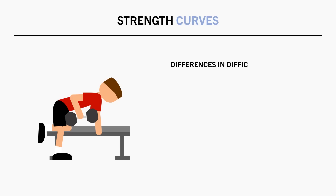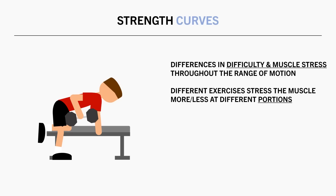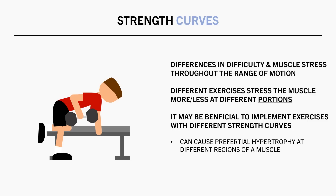The next consideration is the strength curve of each exercise. This refers to how difficult an exercise is at different portions throughout the range of motion and how hard the muscle has to work at different points of the movement. While two exercises may train the same muscle, certain exercises may have more or less tension at different portions of the movement, meaning different exercises may stress the muscle more or less at different ranges of motion. So in theory, it may be beneficial to implement multiple exercises which train a muscle group with different strength curves, potentially resulting in preferential hypertrophy at different regions of the same muscle and more uniform overall muscle development across the entire muscle belly. Although we don't have solid evidence supporting this claim, there is some evidence indicating this may be a viable strategy.